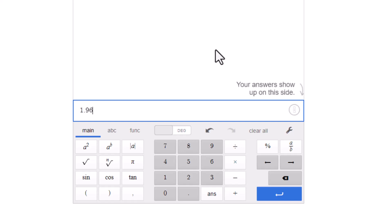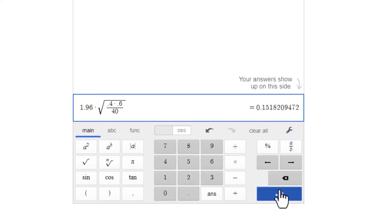So 1.96 times square root. Okay, this is very good. Now, I want to put a fraction in there, right? I got to put a fraction in. So 0.4 times 0.6, all divided by 40. Good, very good. So that's going to give us, we got a percentage here of 15%. Let's use that 15% as our margin of error and see what it tells us.